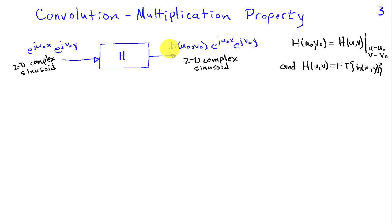that what you get out is a 2D complex sinusoid with the same frequencies, but modified by H of u-naught comma v-naught, where H of u-naught comma v-naught is the 2D Fourier transform of the system's impulse response evaluated at u-naught and v equals v-naught. So recall,